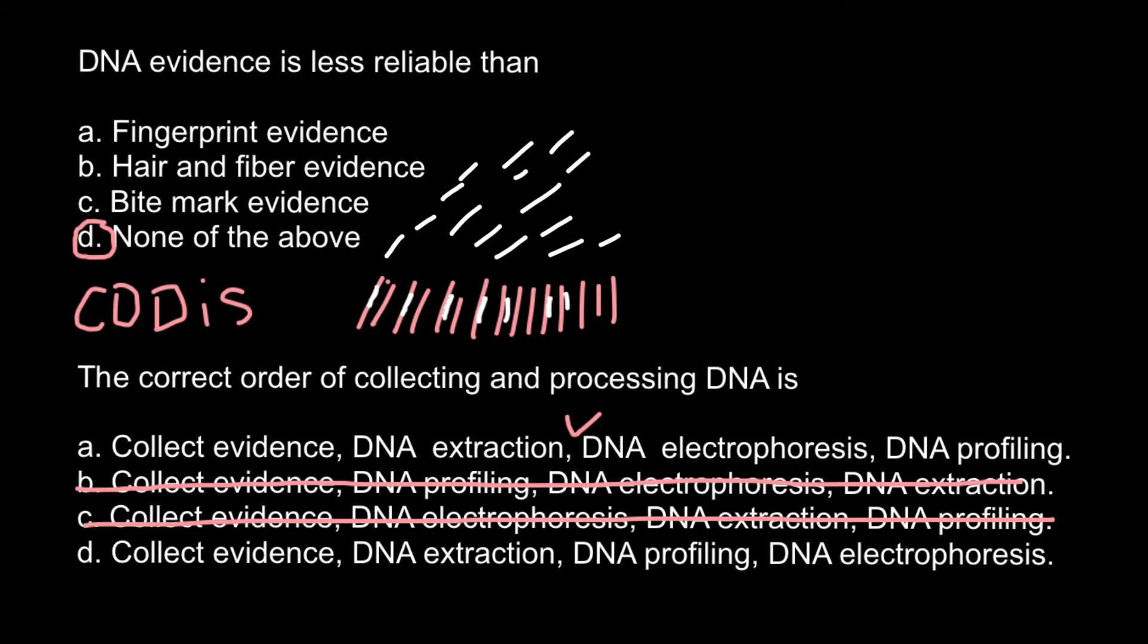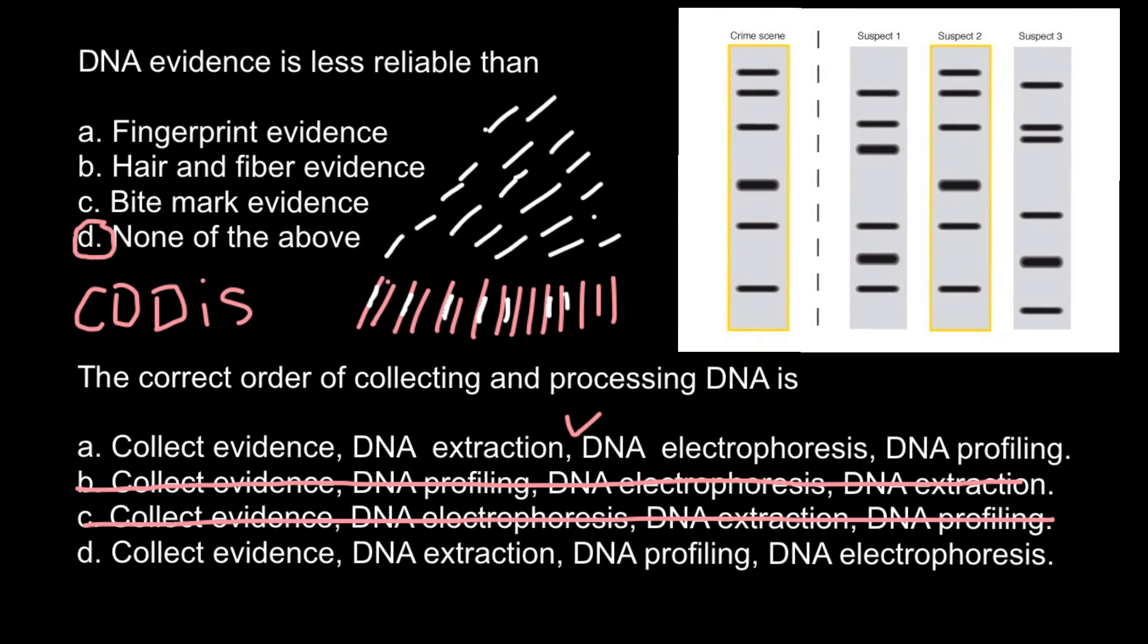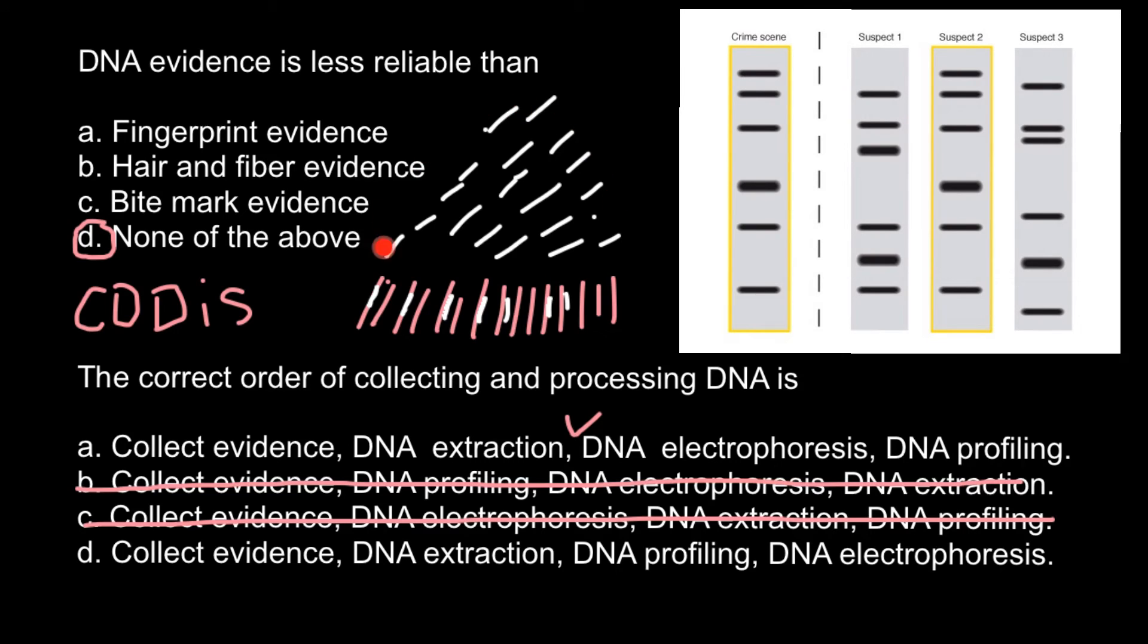Of course, each fragment would be of a different size, and that means that when we do DNA profiling or electrophoresis, when we load all this mixture and turn on an electrical current, all those fragments would line up according to their molecular weight. Those fragments that weigh more would travel less distance, and those that are smaller can travel a longer distance.